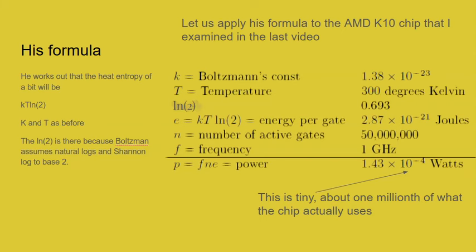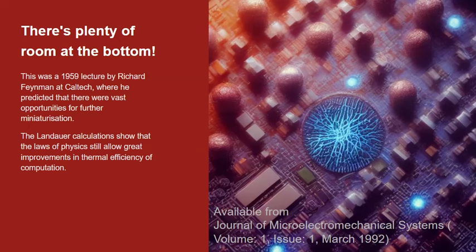There is a great deal of room for technological improvement here. There's a paper by physicist Feynman from 1959 called "There's Plenty of Room at the Bottom," in which he argued there was an enormous amount of space available for technology to miniaturize things — going right down to the level of moving individual atoms around, which can now be done by scanning tunneling electron microscopes. The Landauer calculation, which came out a couple of years later, showed that there was huge room still for improvements in thermal efficiency.